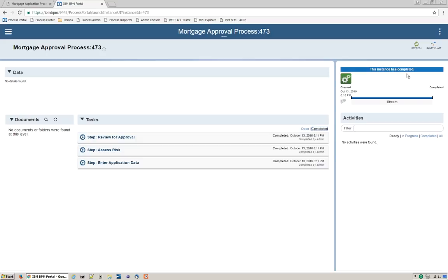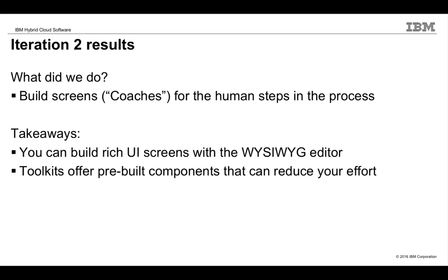Iteration two is now complete. To review, we built screens or coaches for the three human steps in the process. A couple of takeaways: you can build rich, powerful UI screens with the What You See Is What You Get editor in Process Designer. You can also use toolkits, which are reusable libraries with pre-built components that can greatly reduce your effort.